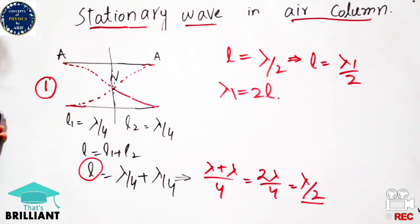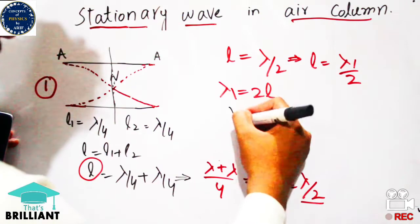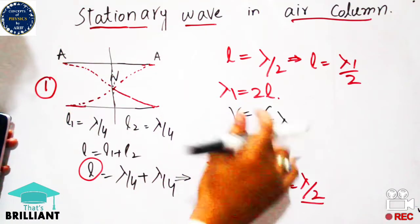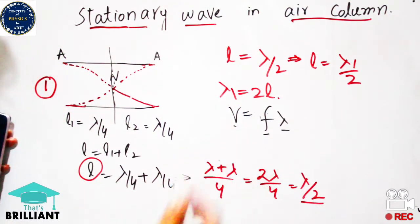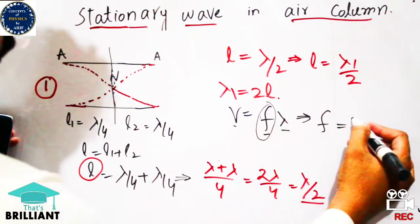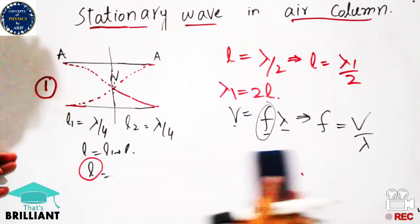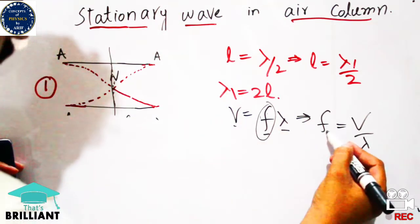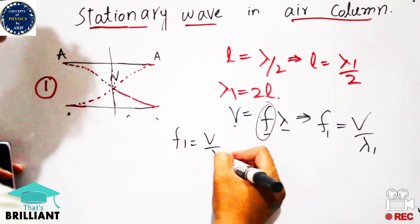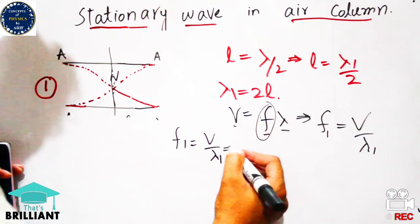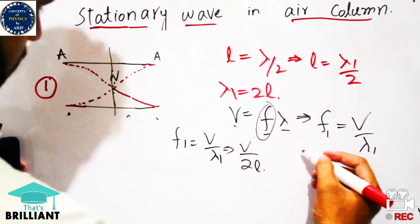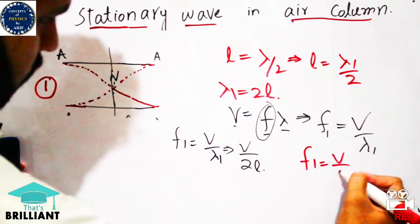We know that v is equal to f times lambda, so we put the value of lambda one for mode one: v equals f1 times lambda one. In order to calculate the frequency, f is equal to v over lambda. Substituting the value of lambda one, which is 2L, the expression becomes f1 is equal to v over 2L. This is expression one for the frequency of mode one.